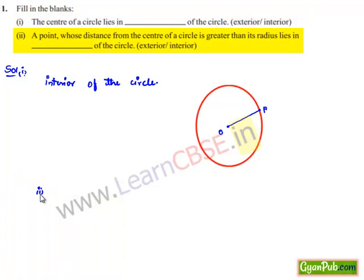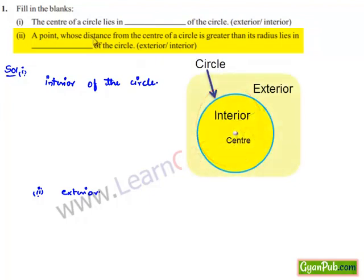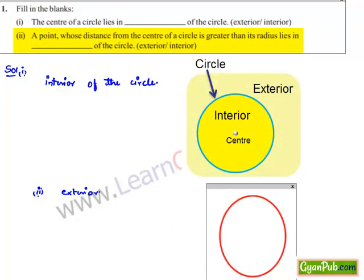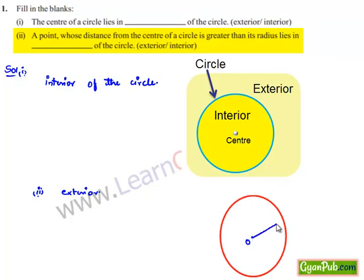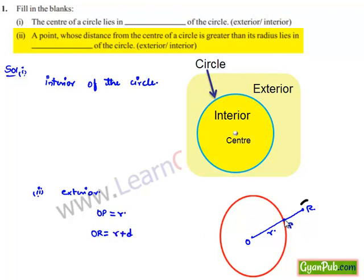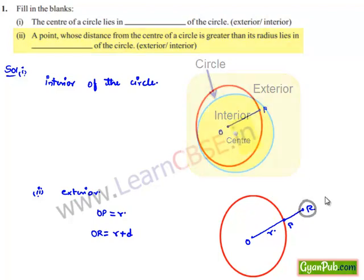Coming to the second bit: a point whose distance from the center of the circle is greater than the radius lies in the exterior of the circle. If we consider a circle with center O, the radius is the distance between center O and any point P on the circle. If we consider a distance greater than R, then we can say that it always lies outside the circle. Therefore, a point whose distance from the center is greater than its radius always lies in the exterior of the circle.